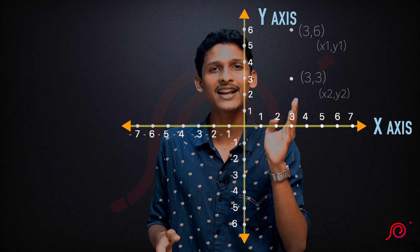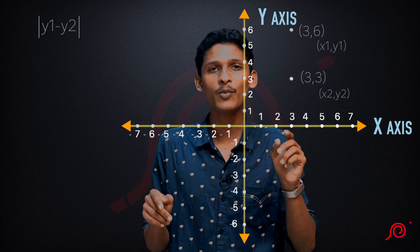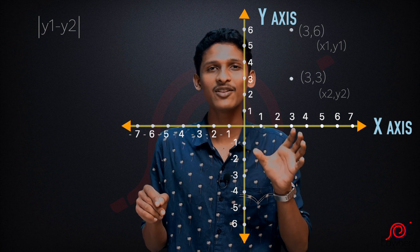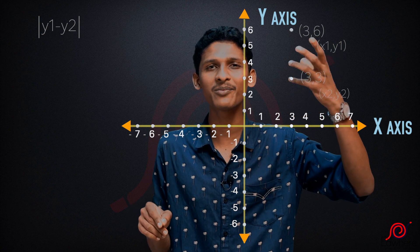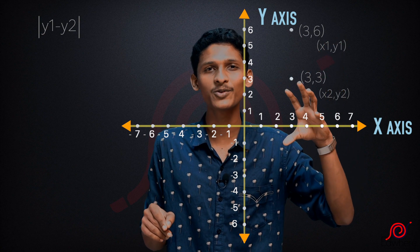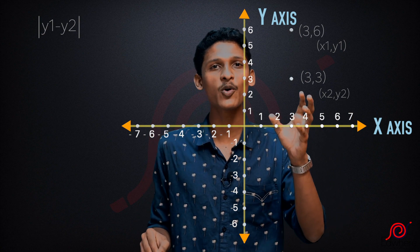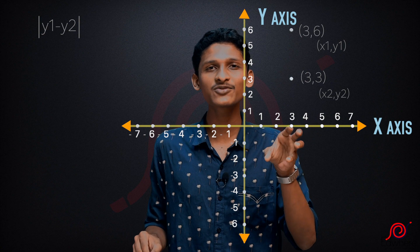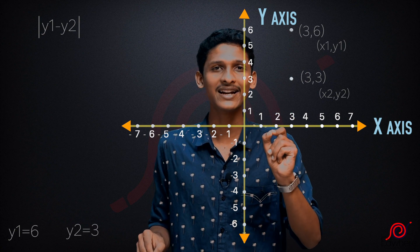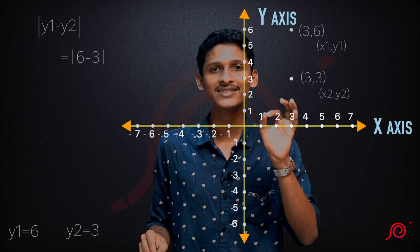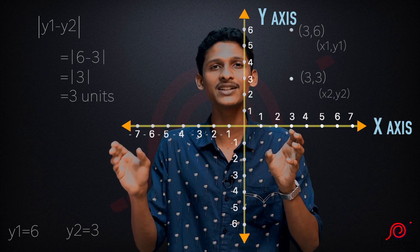Then we use the formula with the y-axis. That means the line is parallel to the y-axis, and there are two points at distance. We use the mode of |y1 - y2|. If y2 is 6 and y1 is 3, then the distance is |6 - 3|, which equals 3. So the distance is 3 units.